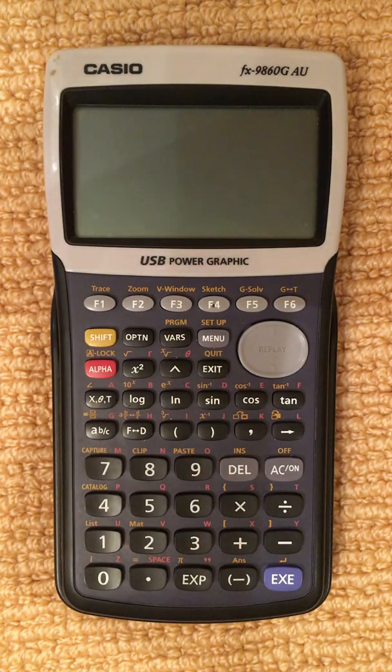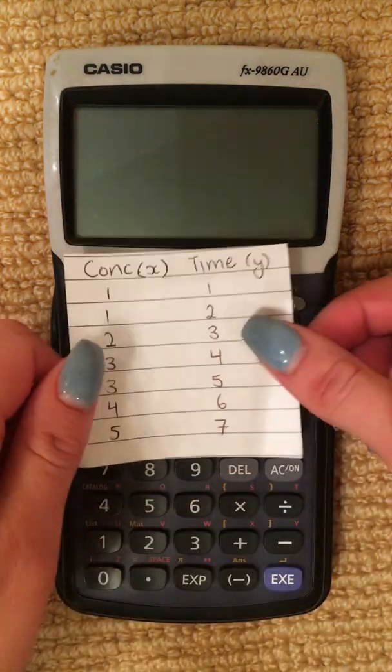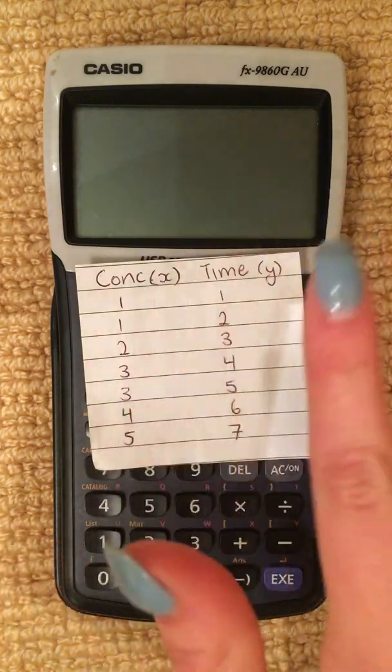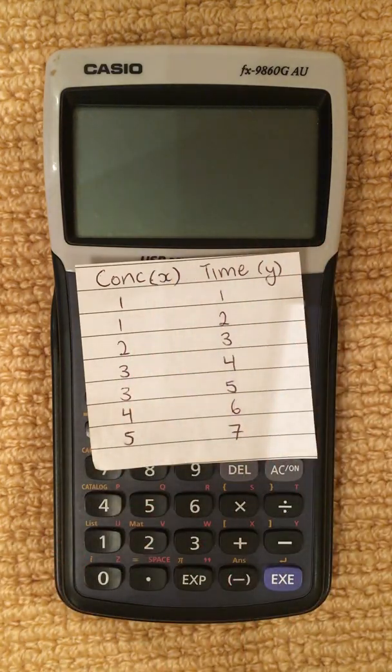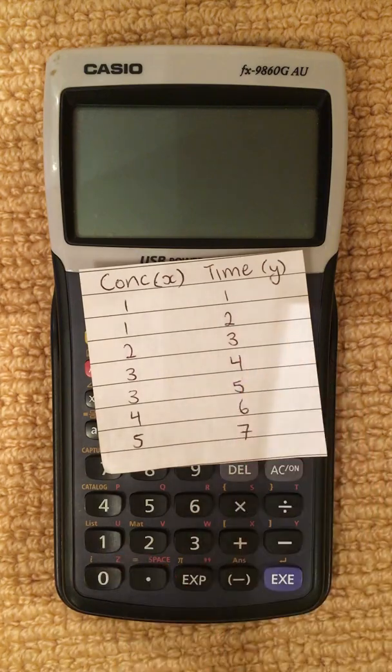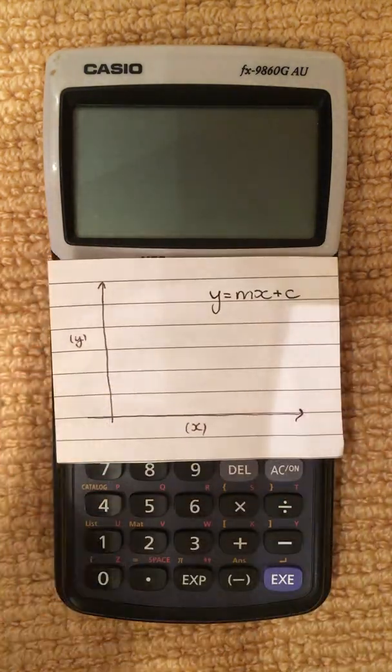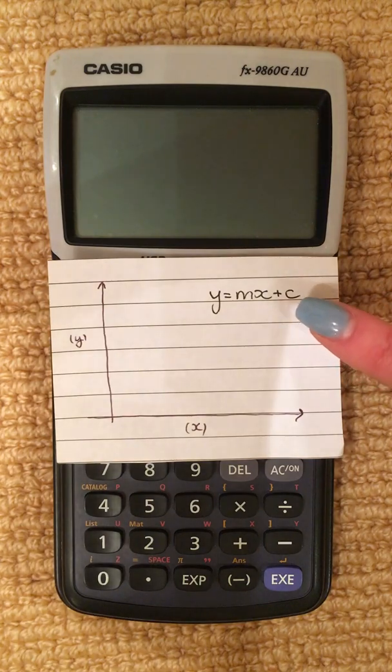Pretend that we finished our science experiment and we have two variables that we wish to plot against each other, our X variables and our Y variables, our independent and our dependent. We want to put them on a graph that looks similar to this and we wish to find the line of best fit.